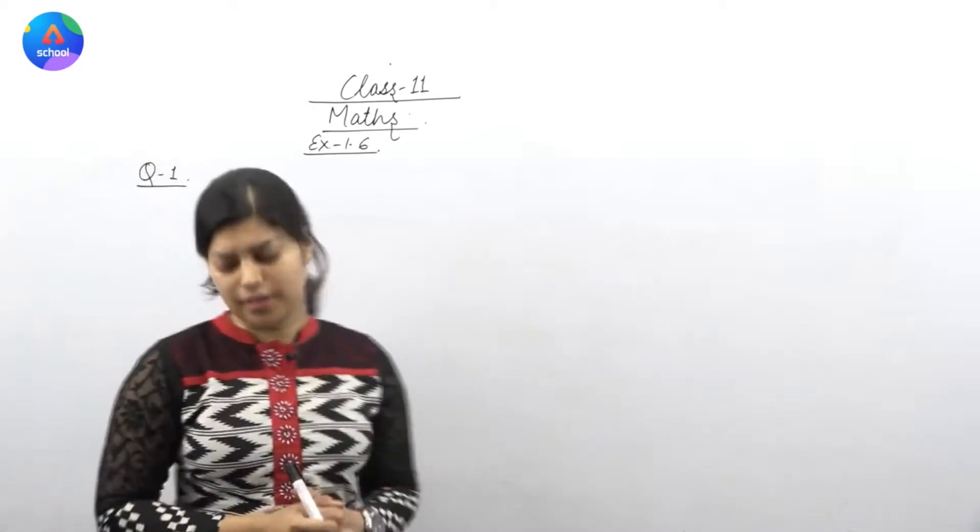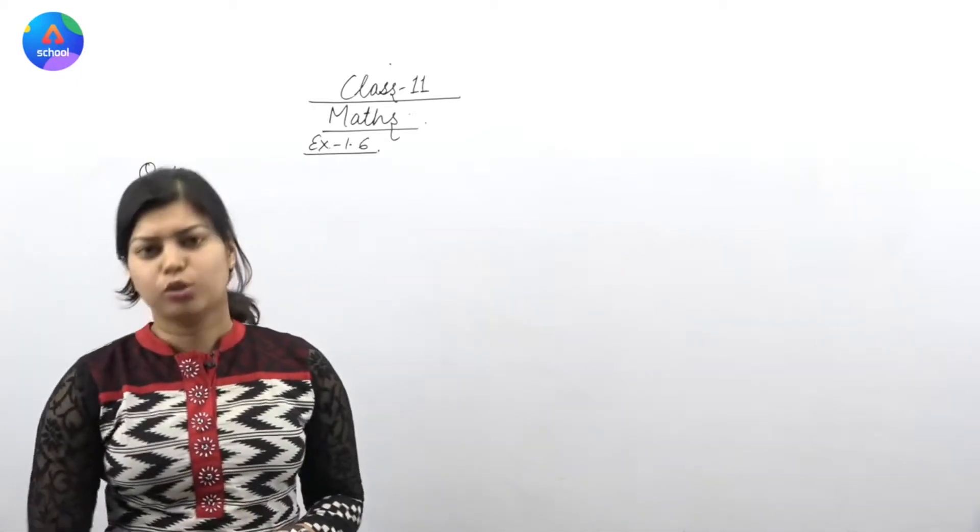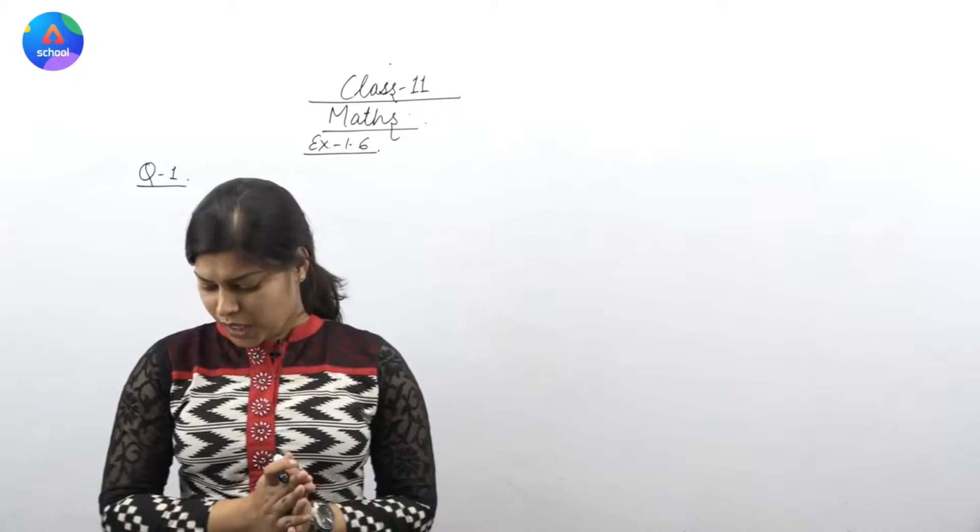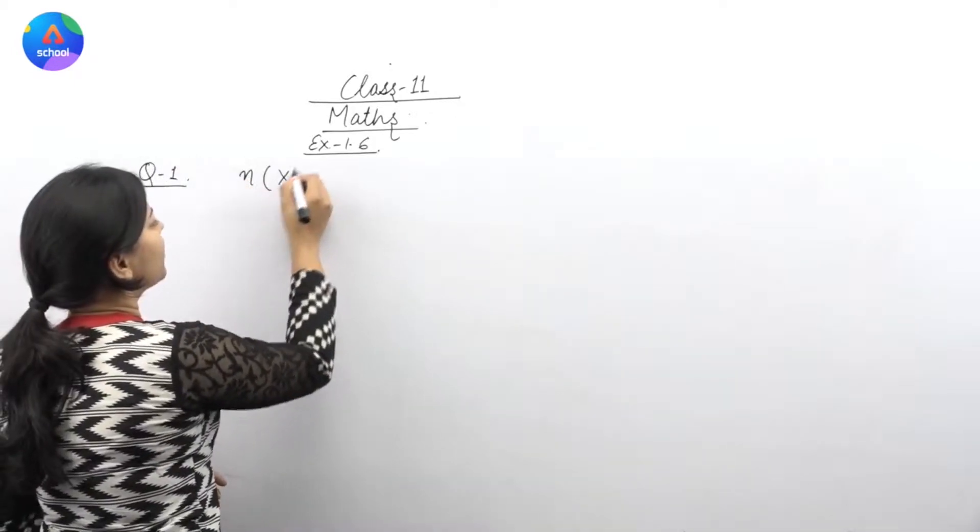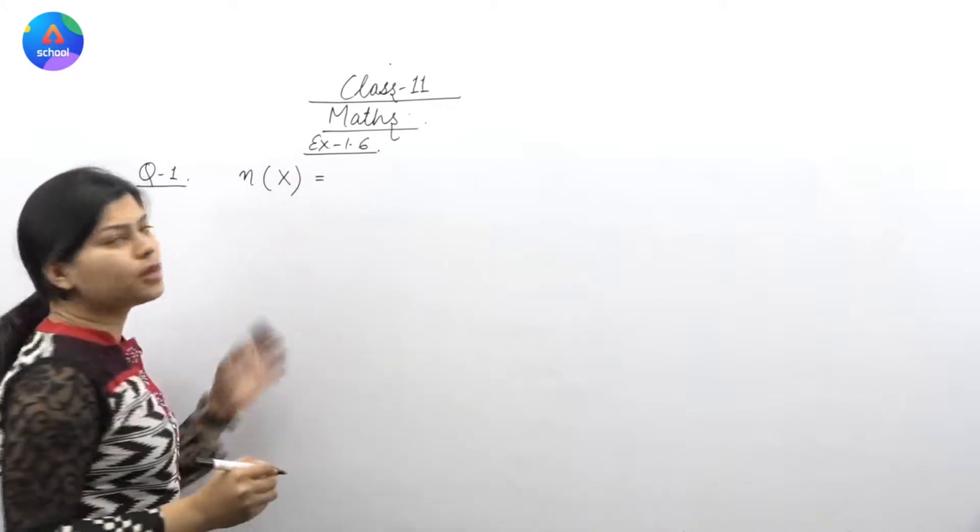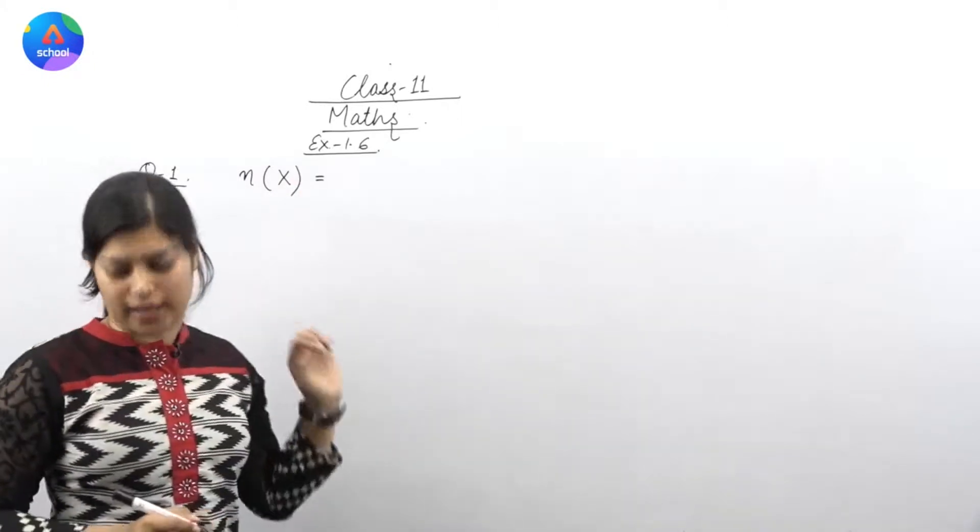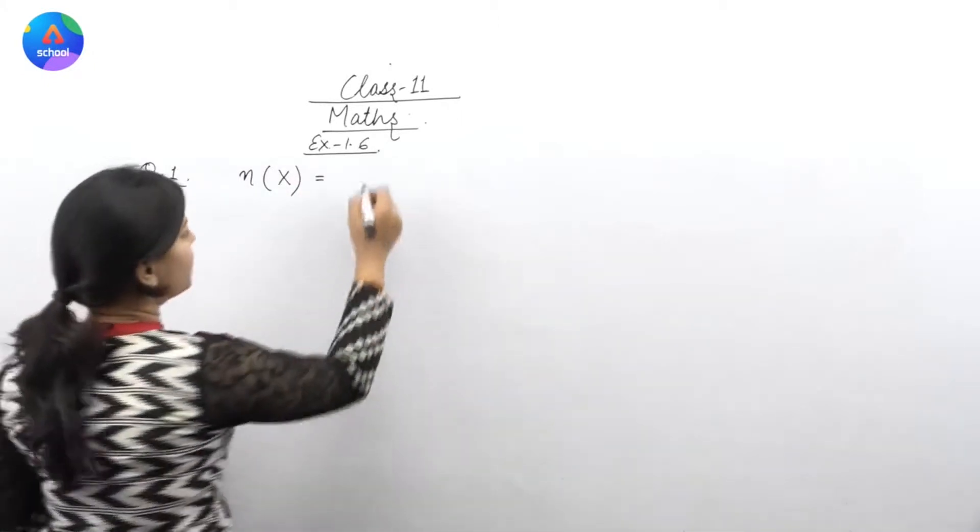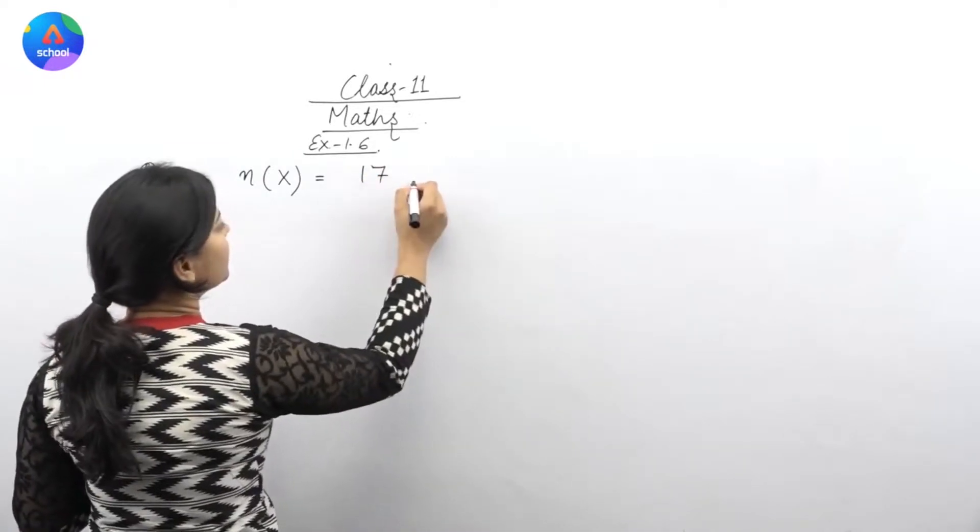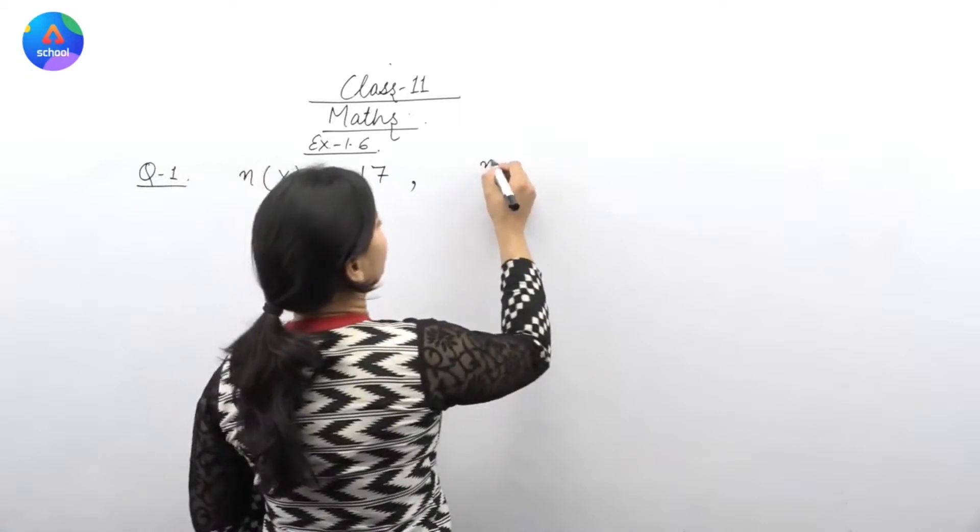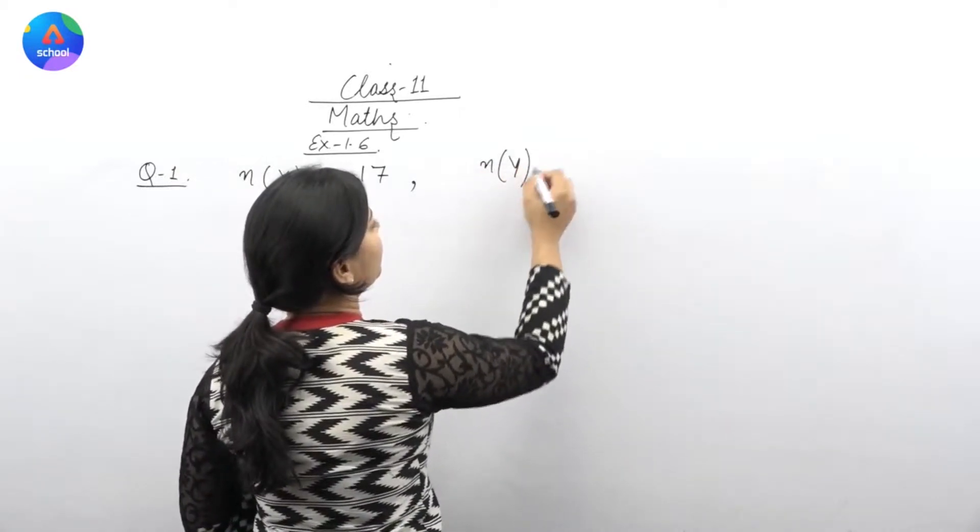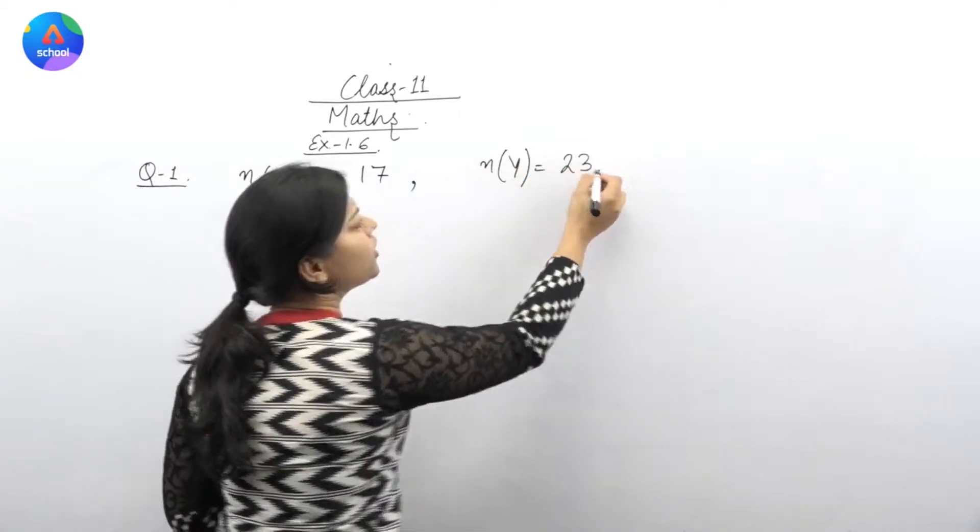Question 1, what has given us? There are two sets, X and Y. In those sets, we have number of elements given. Number of elements in set X is 17. Second thing we have given is number of elements in Y. In this set, we have 23 elements.